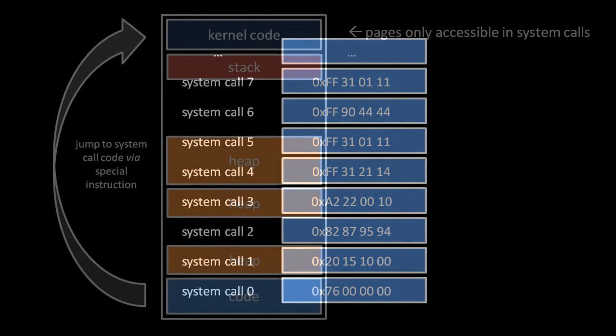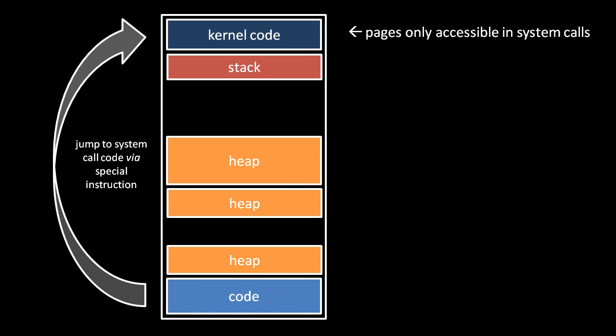In most modern operating systems, the kernel code for these system calls — and actually the table for the system calls itself — are placed inside the address space of each process. Usually this is placed at the top of the address space, and the stack starts immediately below it. These pages of the address space are normally marked such that the process itself cannot access them. Only when the process invokes a system call via the special instruction does execution actually jump up to the kernel code.